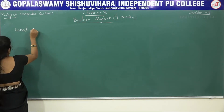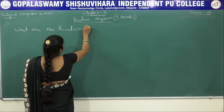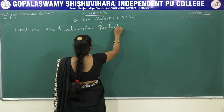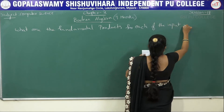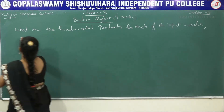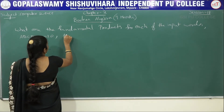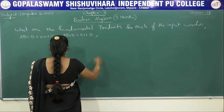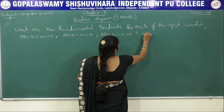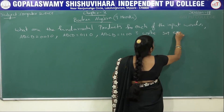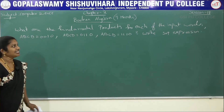Problem 1: What are the fundamental products for each of the input words? Input words: ABCD = 0010, ABCD = 0110, ABCD = 0010, ABCD = 1110. Write the SOP (sum of product) expression for these inputs.